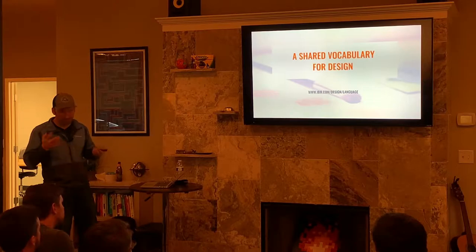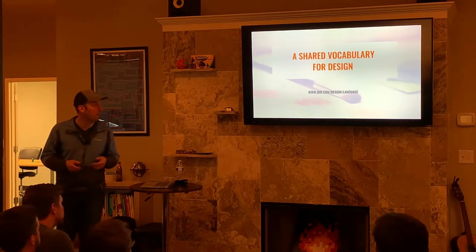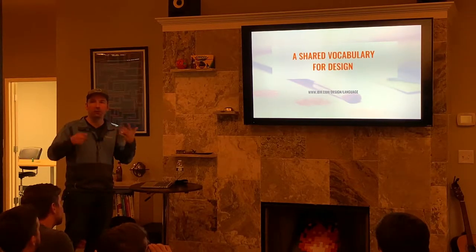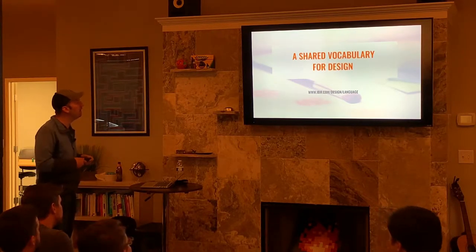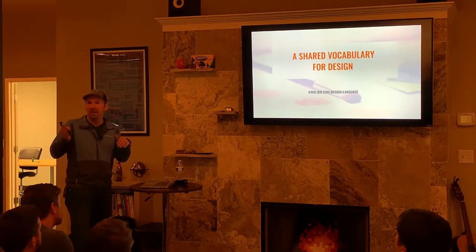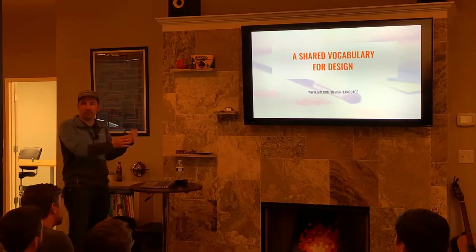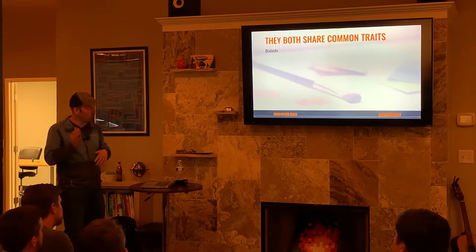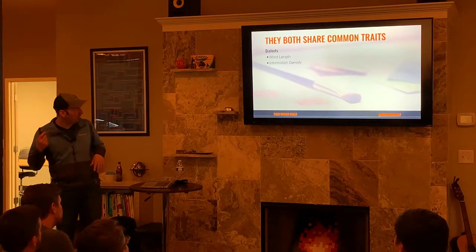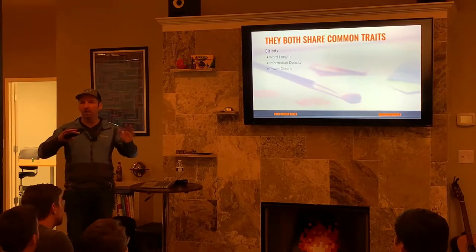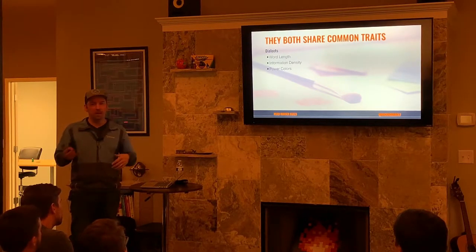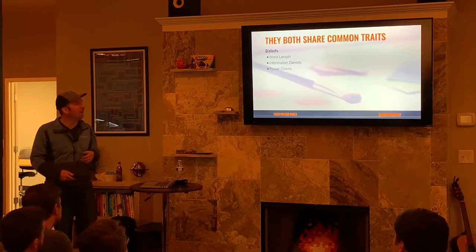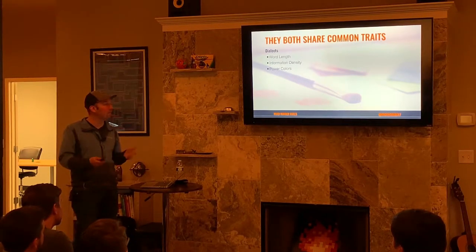Another definition of visual language comes from IBM's design system — a beautiful site that dives into lots of great concepts. They say it's 'a shared vocabulary for design.' The design system or the visual language is how we communicate this vocabulary we have for design. It's the same idea of having a bunch of words to speak with, in the same way we have different visual elements to speak with. Maybe we could break it down using the same scientific method. Both share really similar traits — like dialects: things like word length, information density, power colors. All these things are different depending on the part of the world you're in, just like spoken dialects.